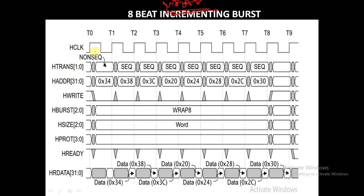In clock cycle T0 to T1, the first transfer is non-sequential and the address is 0x34. In clock cycle T1 to T2, the transfer type is sequential and the address is 0x38, incrementing by 4 bytes because the data size is word which is 4 bytes. Next it increments from 0x38 to 0x3C, which is the wrapping boundary. So it will go to 0x20, then 0x24, 0x28, 0x2C, 0x30, and so on. Total 8 beats have been completed.